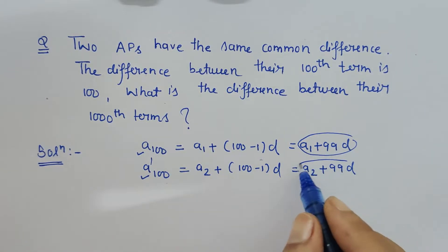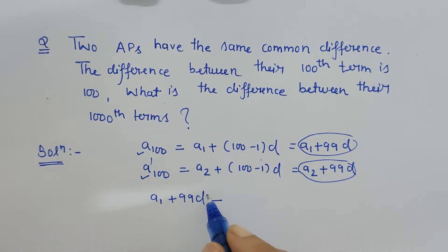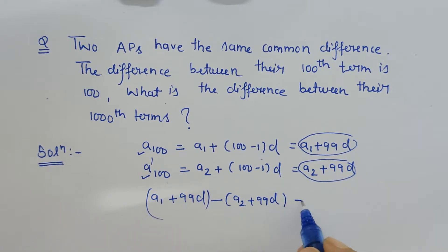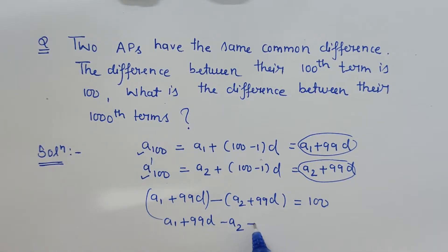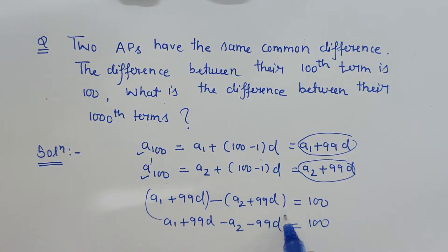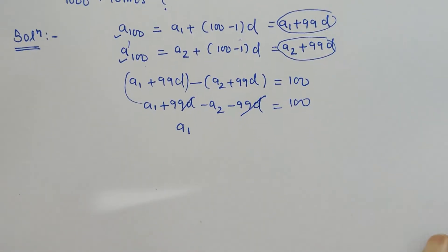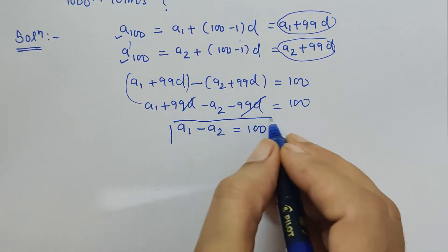That means (a1 plus 99d) minus (a2 plus 99d) equals 100. Expanding this: a1 plus 99d minus a2 minus 99d equals 100. The 99d terms cancel, and we are left with a1 minus a2 equals 100.